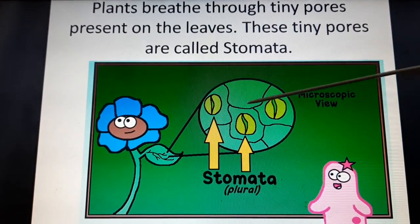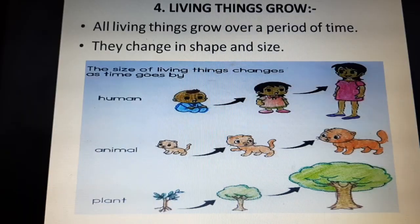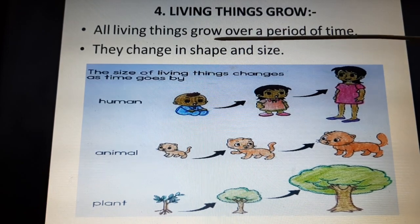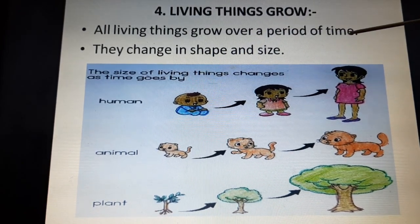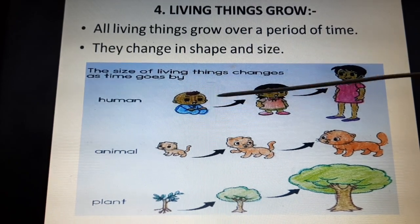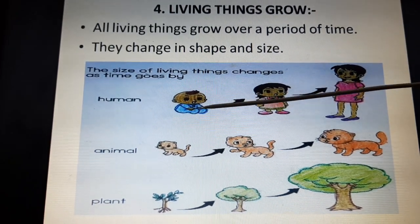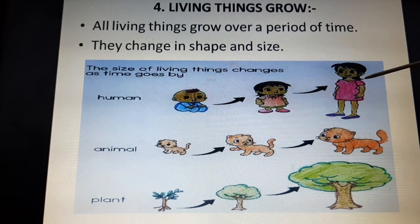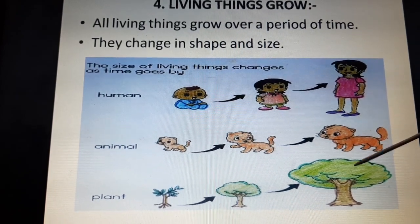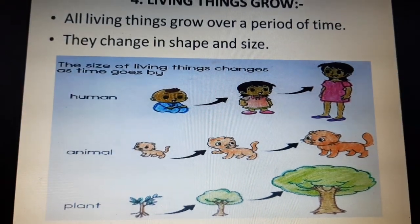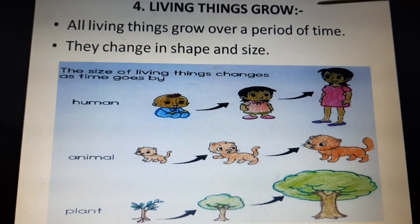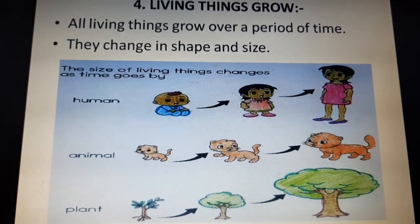These tiny pores on plant leaves are called stomata. Our next point is that living things grow. All living things grow over a period of time — they change their shape and size. As you can see in the picture, a human grows from a child to an adult, animals grow, and a plant grows into a tree. So these are the four differences between living things and non-living things.